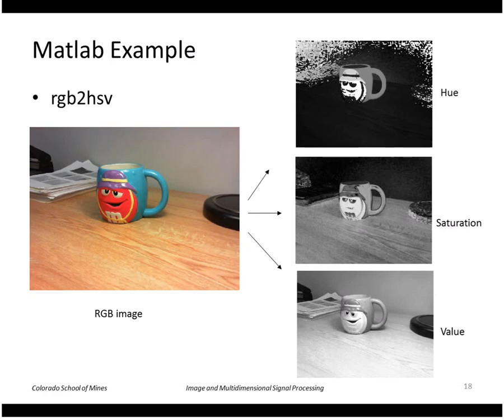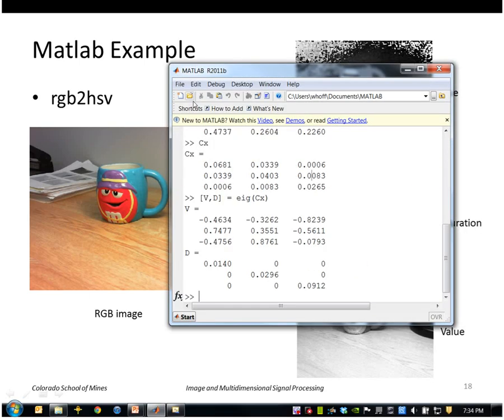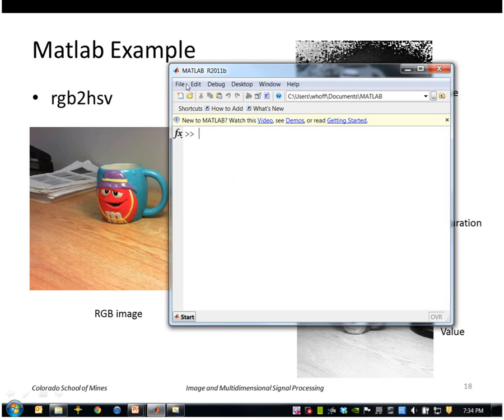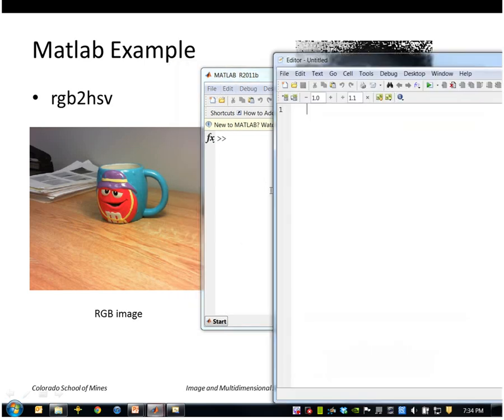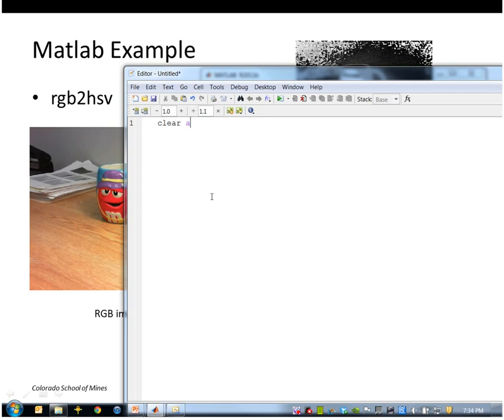Here's an example in MATLAB. We're going to use the function RGB to HSV. MATLAB uses hue, saturation, and value instead of hue, saturation, and intensity, but it's almost the same thing. So we take this color image, this RGB image, and split it out into its bands: hue, saturation, and value. Let me go ahead and do that. I'm going to start up a program.